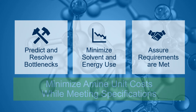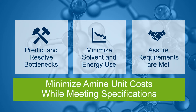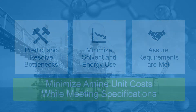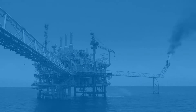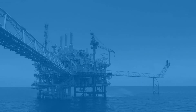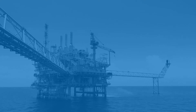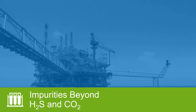With a better understanding of the acid gas removal unit, engineers can minimize the amine cost while meeting specifications. The primary objective of the acid gas removal unit is to remove hydrogen sulfide and carbon dioxide, but other impurities make the operation difficult to predict.